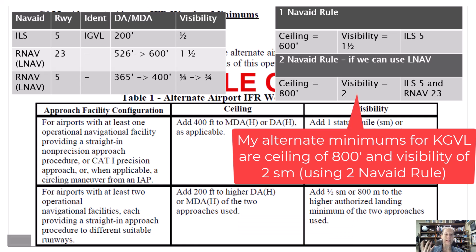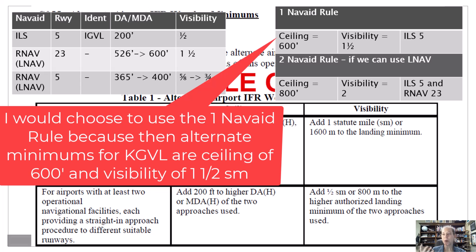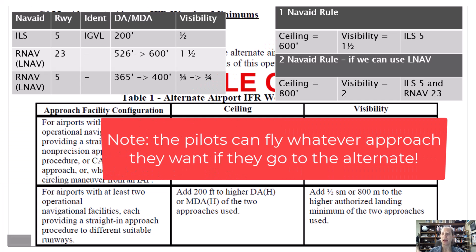In this case, as a dispatcher, I'm going to recommend we use the one NAVAID rule and base it completely on the ILS to runway five at GVL. That works fine — as long as we have calm winds, I'll just use the one NAVAID rule. That would be my alternate minimums for planning purposes for this flight.